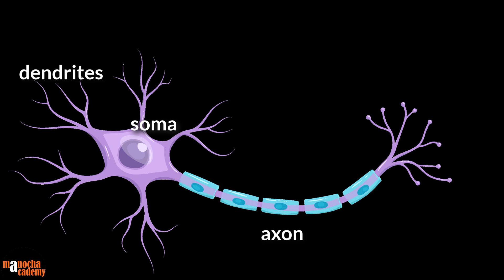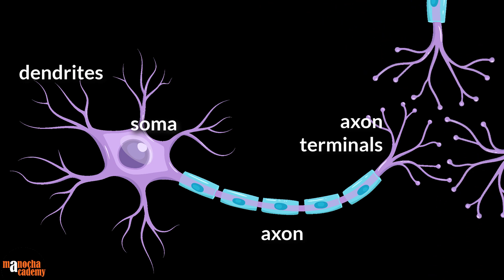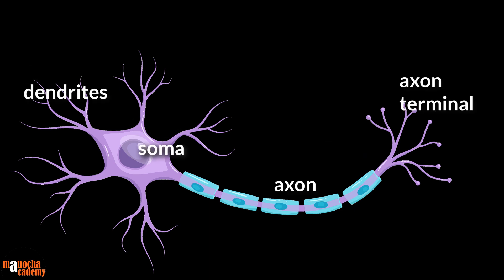At the end of the axon there are terminal branches known as axon terminals. These axon terminals are connected to the dendrites of the next set of neurons. So let's recap: dendrites receive the inputs, the soma processes the information, the axon transmits the output, and the axon terminals connect the output to the next set of neurons.